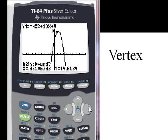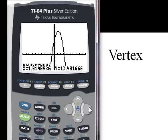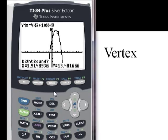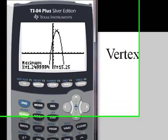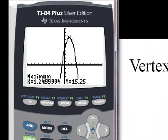And now a right bound. So we need to move our cursor to the right, somewhere to the right of that point. Now you can see we're over to the right. Enter. And when it says guess, hit enter again. And we get the x and y coordinate of our vertex.